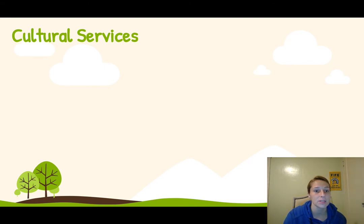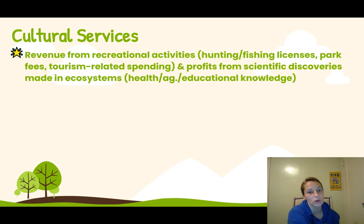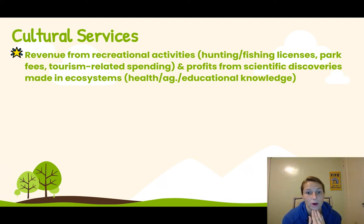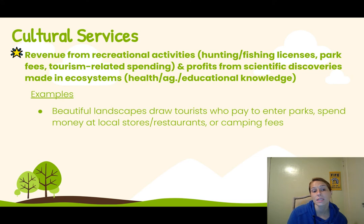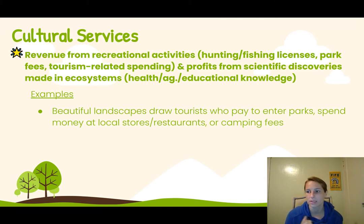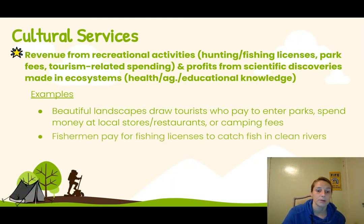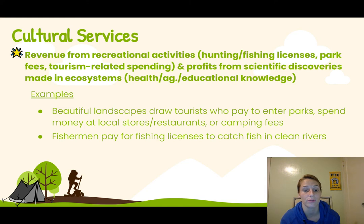Cultural services generate revenue from recreational activities such as hunting and fishing licenses, park fees, and tourism-related spending. We also profit from scientific discoveries made in ecosystems, which helps with agriculture, health, or general educational knowledge. For example, a beautiful landscape like Mount Rainier draws tourists from around the world who pay to enter parks and spend money at local stores, restaurants, and campgrounds. Another example is fishermen paying for fishing licenses to catch fish in clean rivers, generating revenue from those licenses.